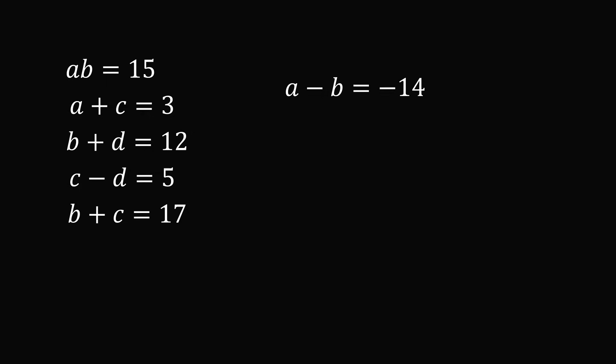So, we have a minus b is equal to minus 14. We can solve this for the variable a. Add b to both sides to get a is equal to b minus 14.